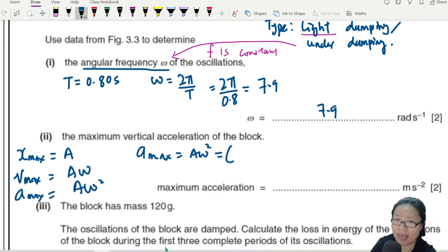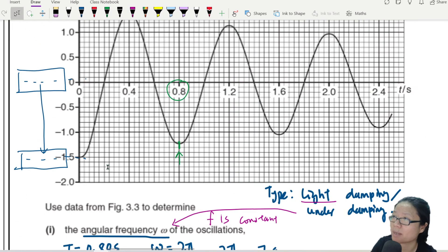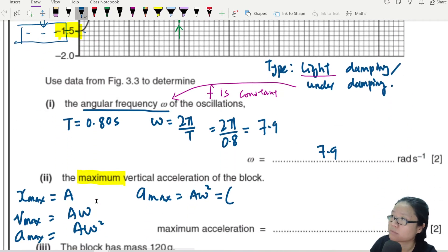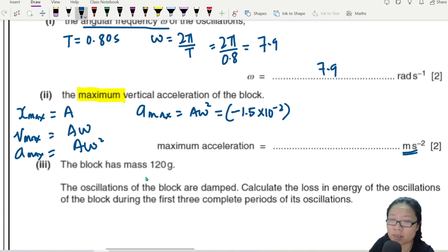So a_max now will be equal to A omega squared. What is my A, teacher? My A keeps changing. They say maximum, right? Take the maximum A. What is the maximum A? Negative 1.5. You see a prefix here hiding: cm. So please include the prefix. Negative 1.5 times 10 to the power of negative 2 cm. Always double check prefix. If this is meter, then the cm must convert to meter. What is our omega? 7.9 squared. And then if you press your calculator, you will get 0.94 meter per second squared.